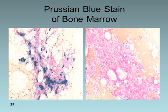This slide shows a bone marrow iron stain using Prussian blue stain. Blue discoloration on the left indicates iron present in the bone marrow, while on the right there is no iron staining, indicating severe iron deficiency anemia.